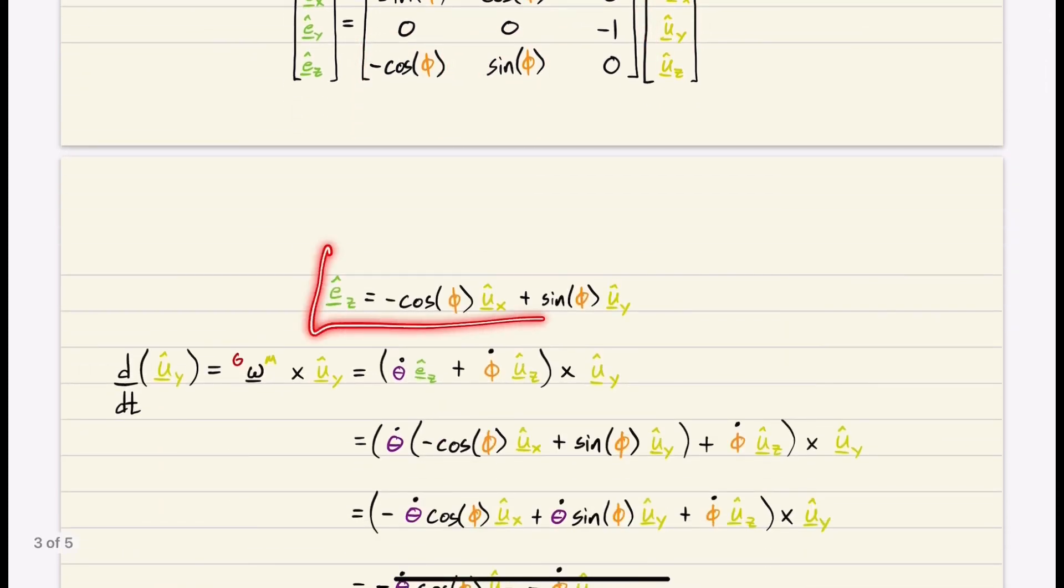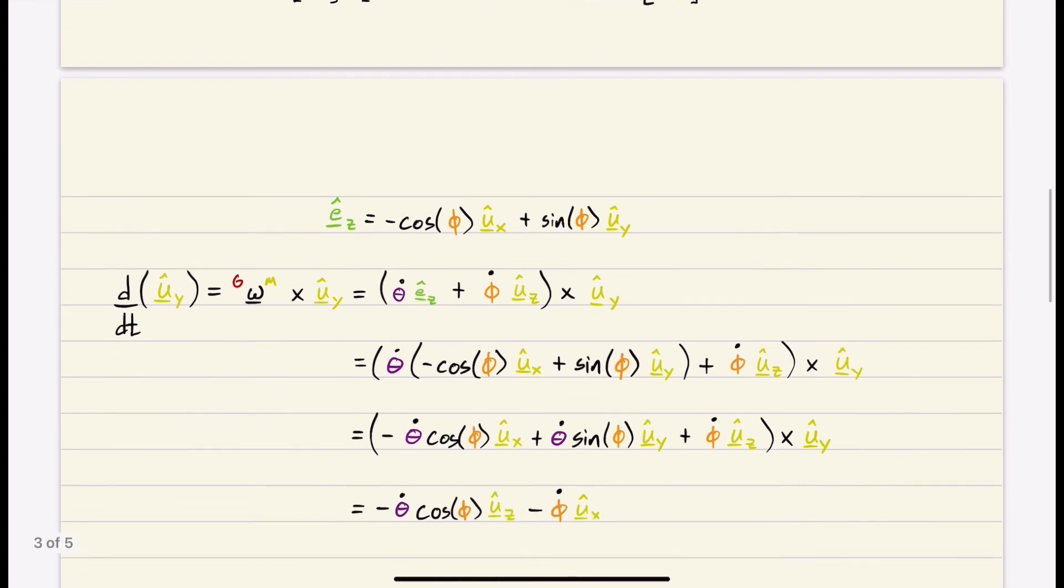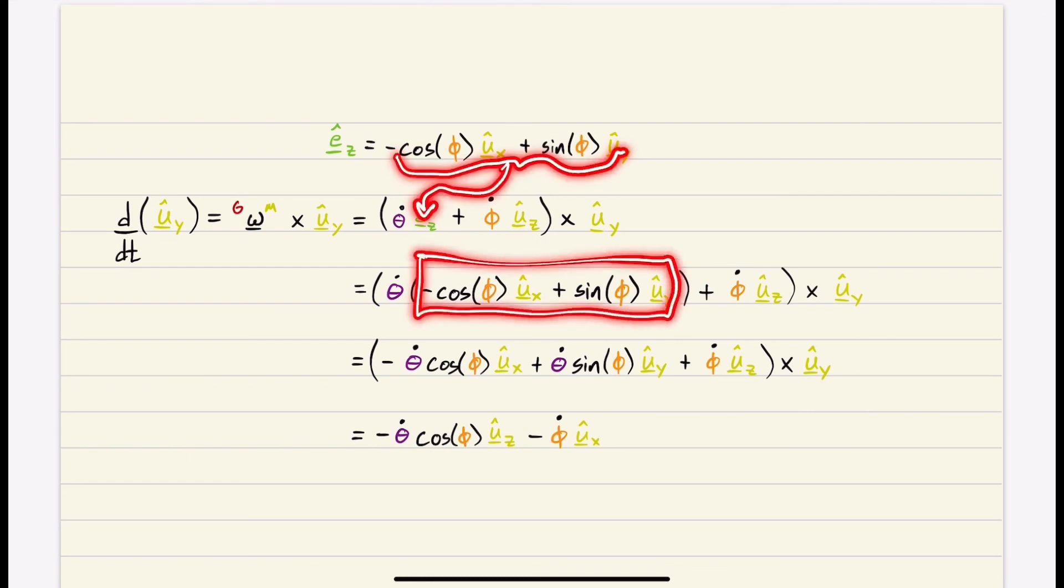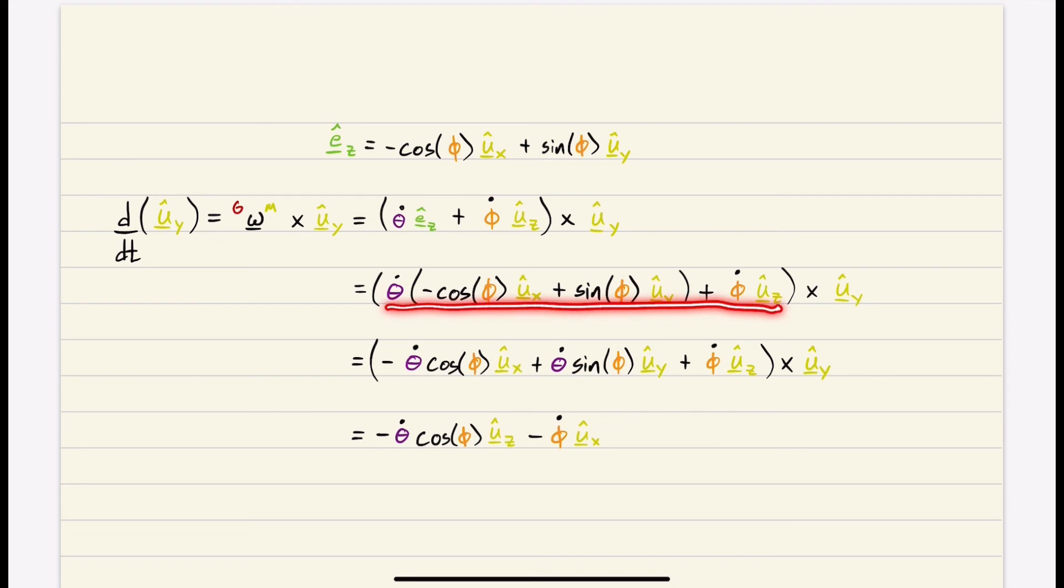And that's exactly what I've written right here. So now I can plug in, this is what we had written before up above, I just copied it down. We can now plug this in for EZ. And when we do that, this is us plugging it in. Now everything is in terms of our yellow basis. So now we can do this cross product.